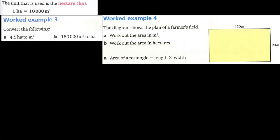We are going to convert 4.5 hectares to meters square. Using the conversion unit: 4.5 times 10,000. Moving the decimal point, that gives us 45 times 1,000, which equals 45,000 meters square. So 4.5 hectares equals 45,000 meters square.